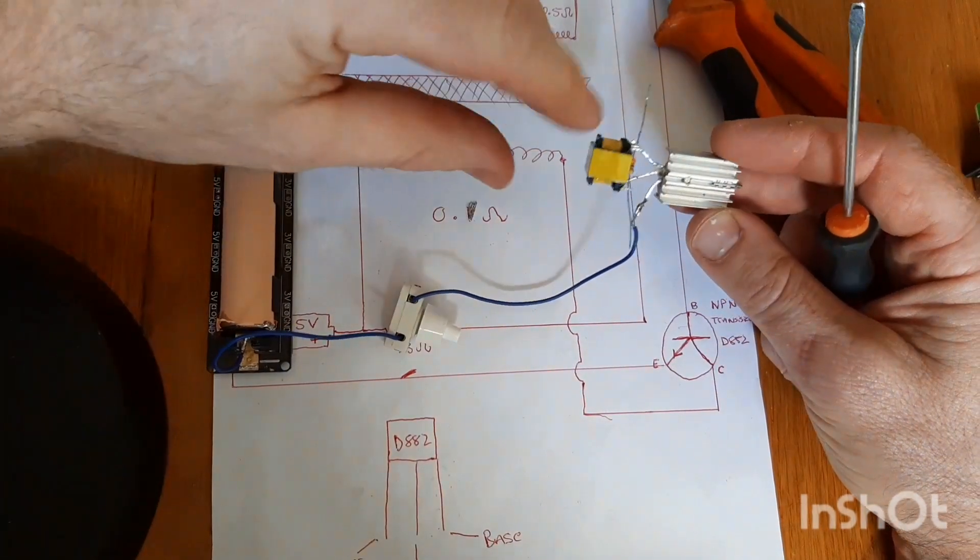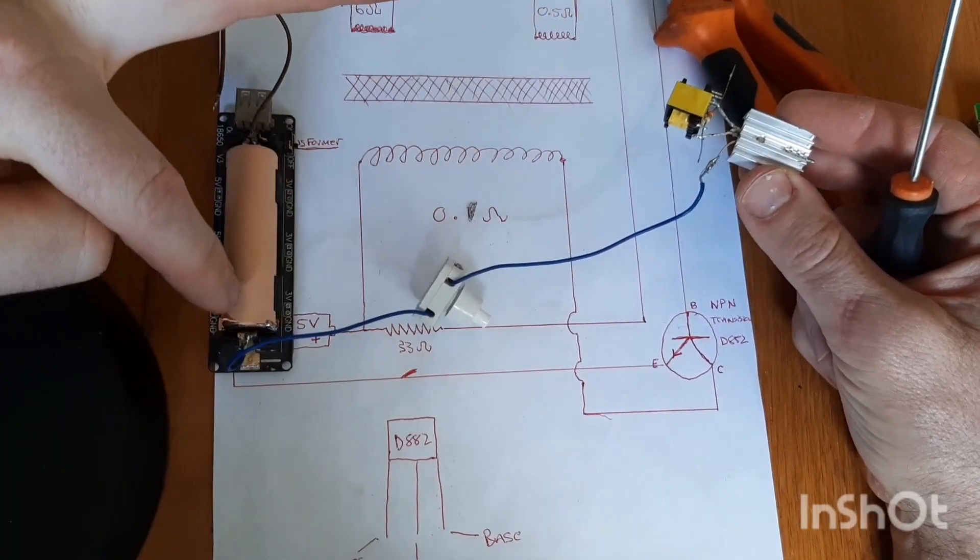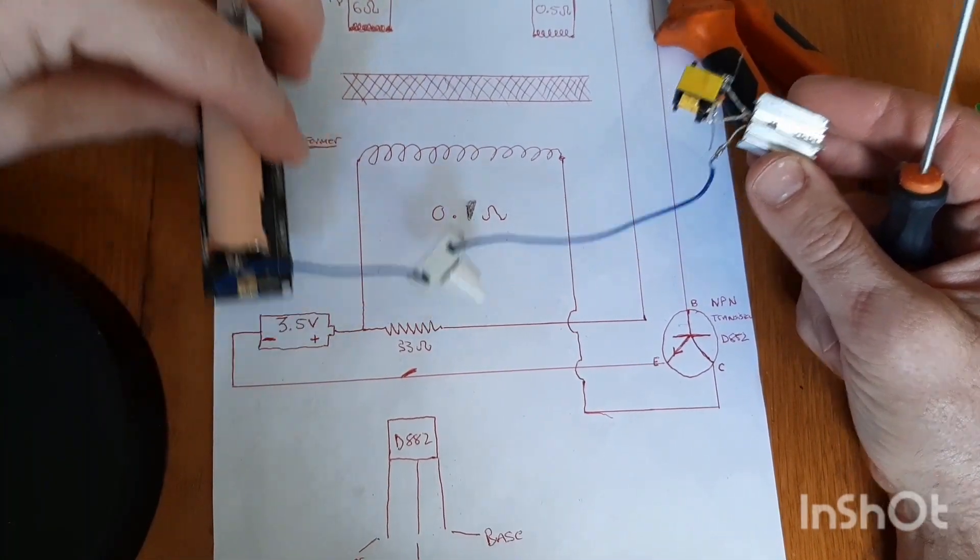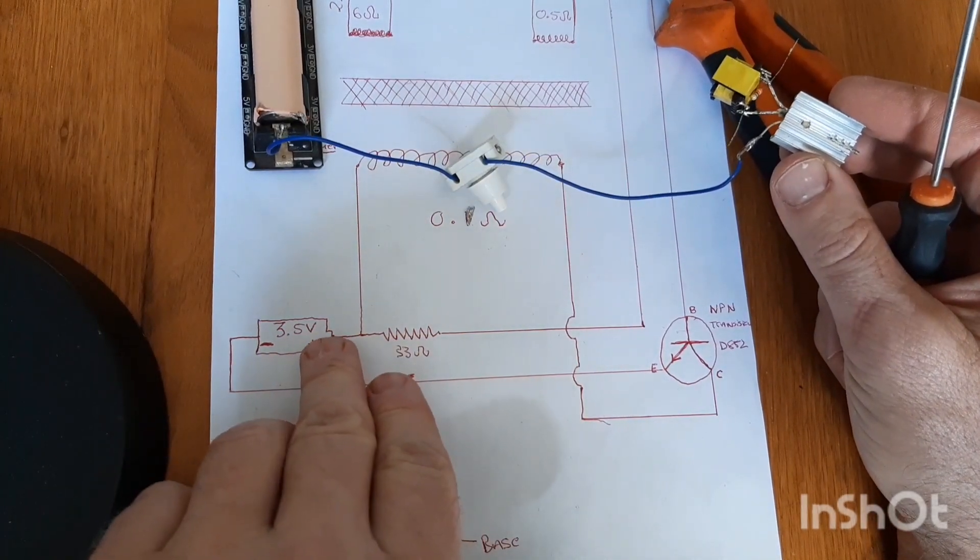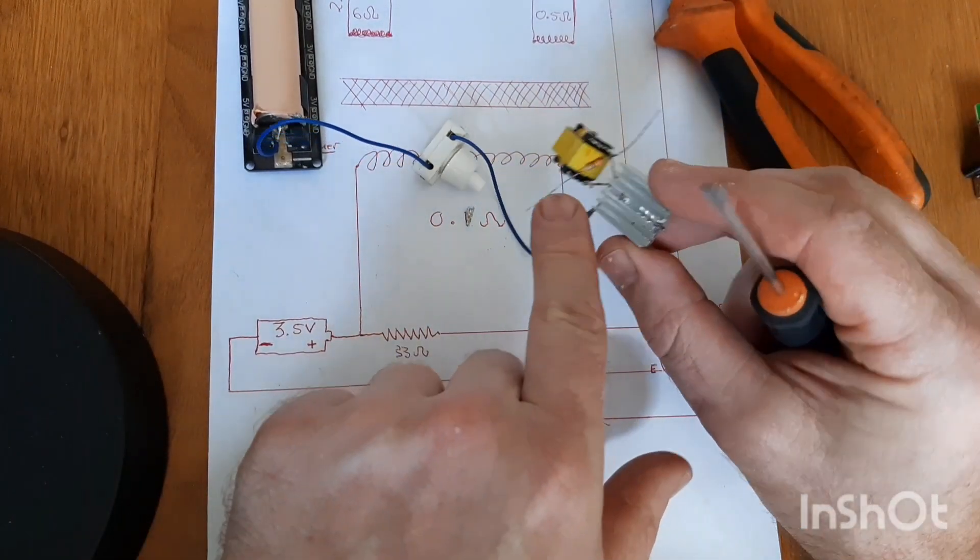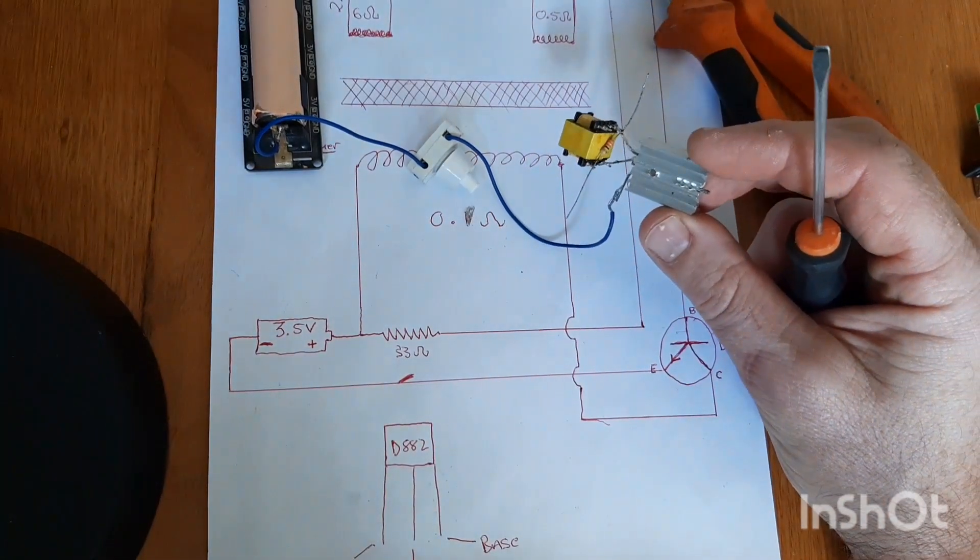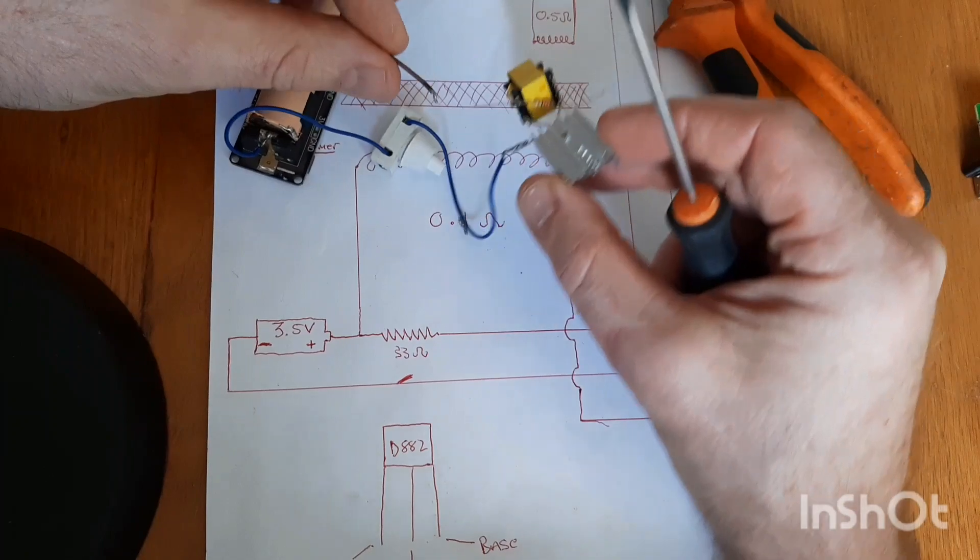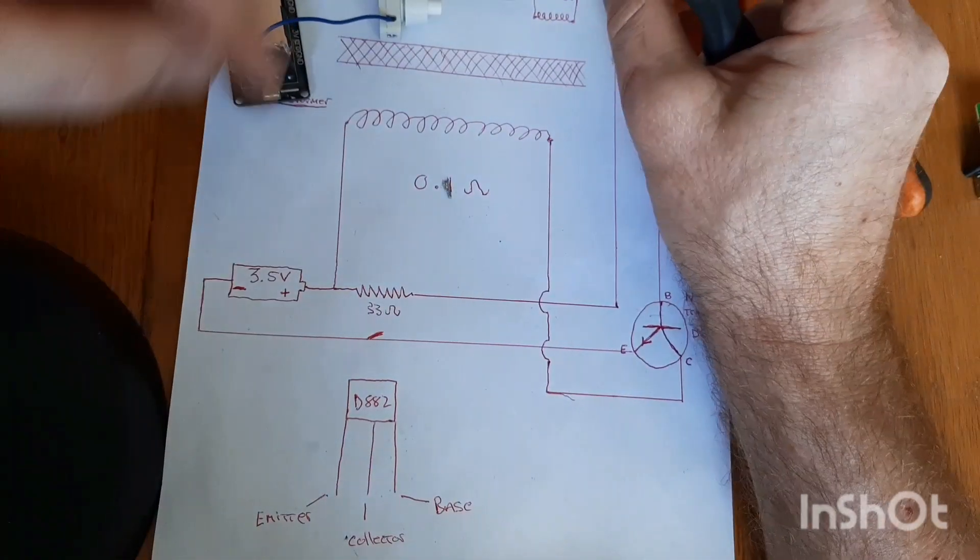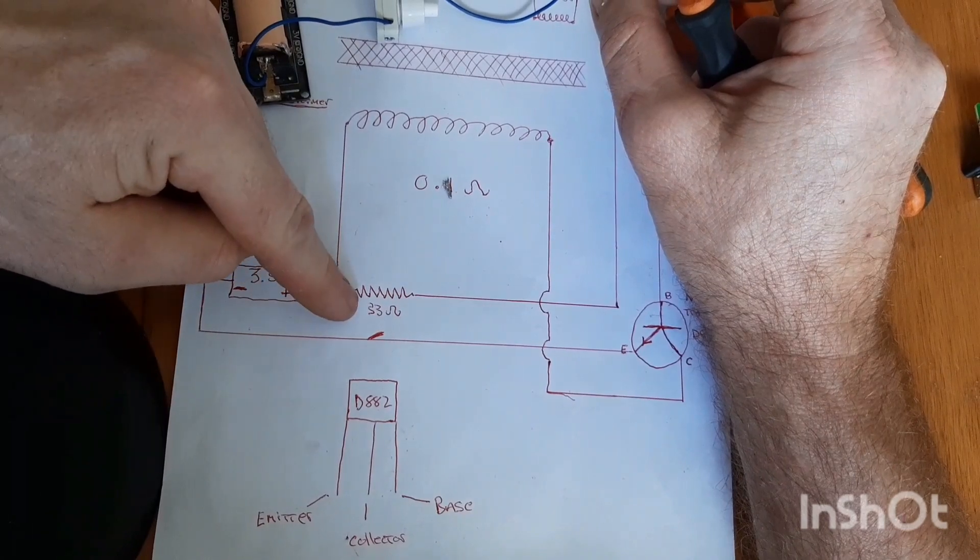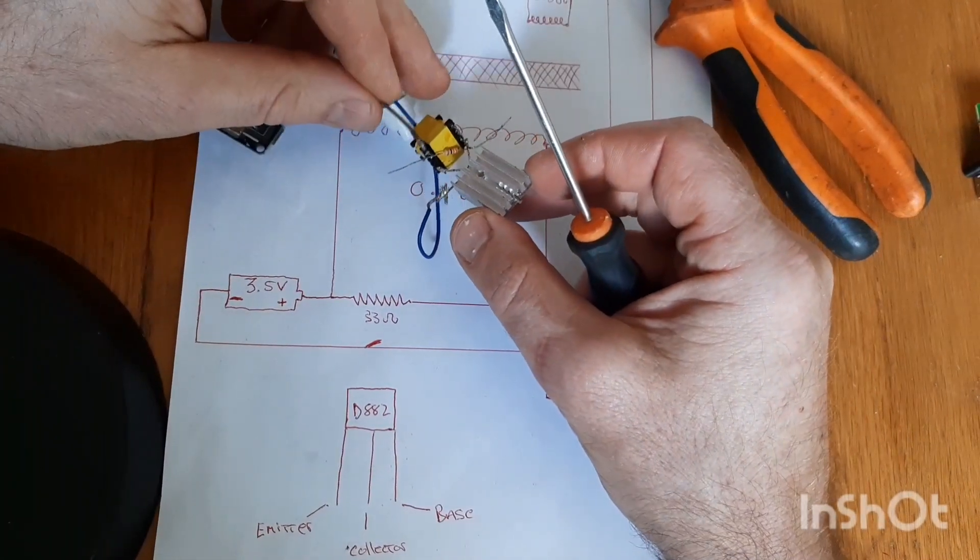So now that we've got our emitter connected to our switch and the negative part of the battery, now we're going to put the positive lead to the resistor, which is over here, onto the transformer. As you can see, the positive gets next to that resistor and the transformer. Let's go and solder that on.